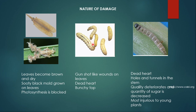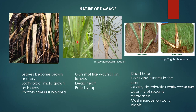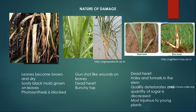For Scirpophaga nivella, the sugarcane top borer, they attack the top part of the stem and show three symptoms. First is gunshot-like wounds visible on the central leaf. Second, the central shoot dies because the larvae feed on the growing tissue of the stem, so the plant cannot grow vertically — this is called dead heart, and you can see a picture of dead heart here. Third, since the plant cannot grow vertically, more branches start coming out from the top, giving a bunch of growing shoots at the top, known as bunchy top.